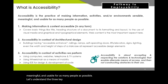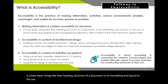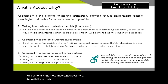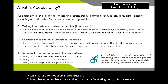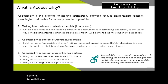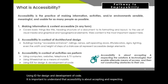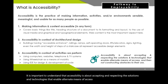Let's understand the three key objects of this definition. Making information and content accessible covers basic things like title and heading structure of a document, its formatting and layout, the use of visual media, and graphical and typographical elements. Accessibility in architectural design includes accessible entrances, railings, ramps, self-operating doors, lifts, signs, lighting, and even the width and height of steps. Accessibility in activities includes using computers, websites, telephone and TV systems, wheelchairs, and IDEs. It is important to understand that accessibility is about accepting and respecting alternate means of access and not constructing obstacles to their use.